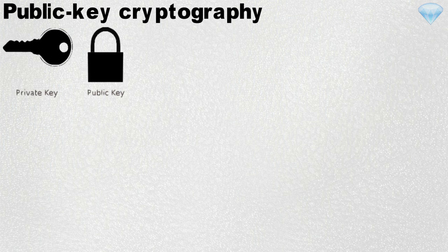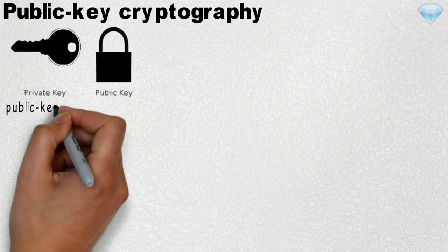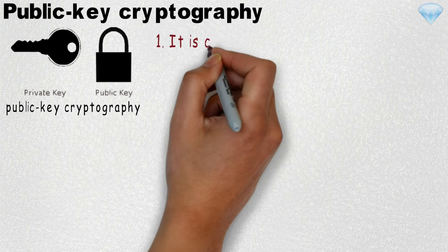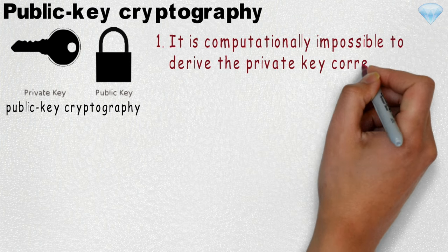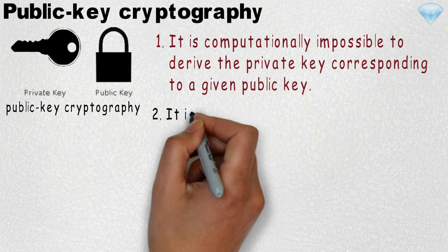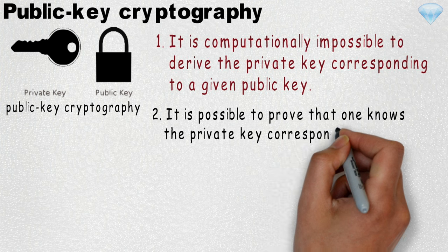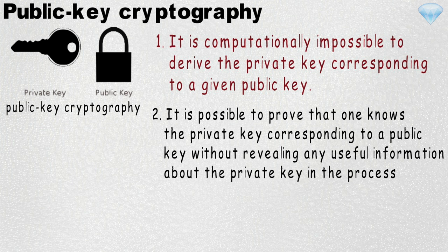Public key cryptography. Public keys, private keys, and digital signatures are the basic components of public key cryptography. No matter what mathematical basis is used to implement a public key cryptography system, it must satisfy the following: First, it is computationally impossible to derive the private key corresponding to the given public key. Second, it is possible to prove that one knows the private key corresponding to the public key without revealing any useful information about the private key in the process.